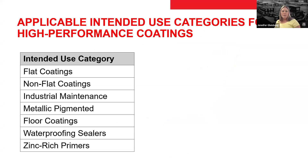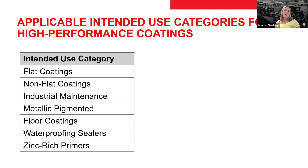When talking about paints and coatings, all of them fall into an intended use category when dealing with HAPs and VOCs. These are the typical intended use categories — not all of them, but the ones where paints and coatings typically fall. The majority fall within the industrial maintenance intended use category, but zinc-rich primers would fall into their own category. Floor products could be categorized as a floor coating depending on their use. A coating or paint manufacturer can help determine what intended use category a product falls into.